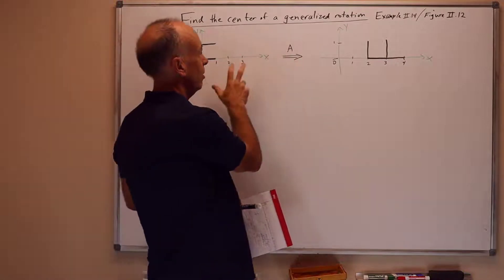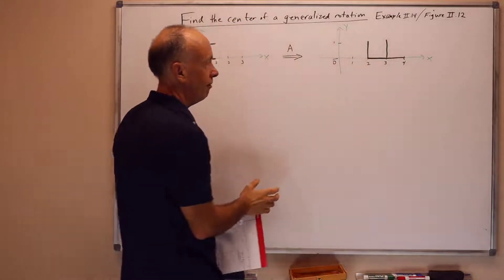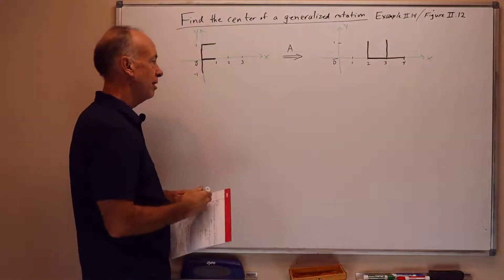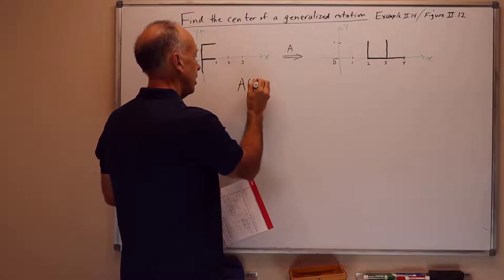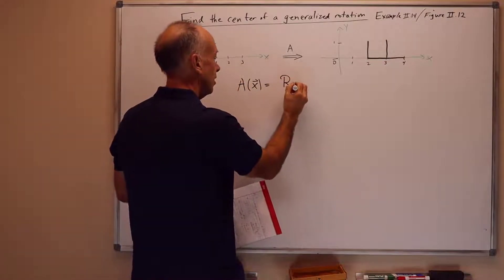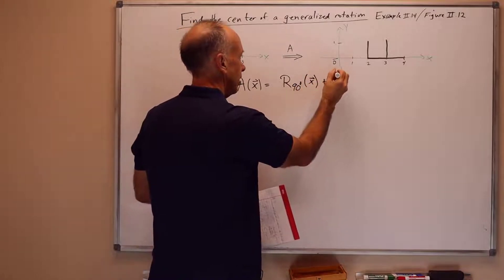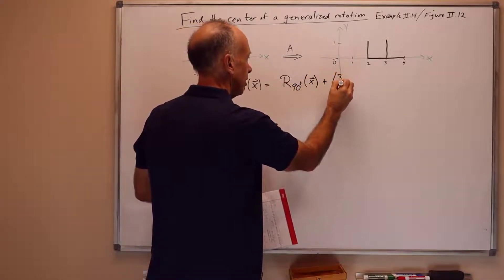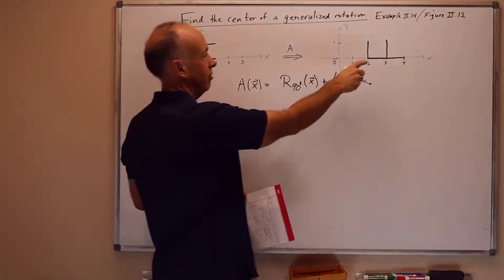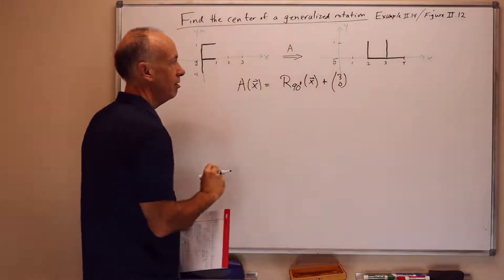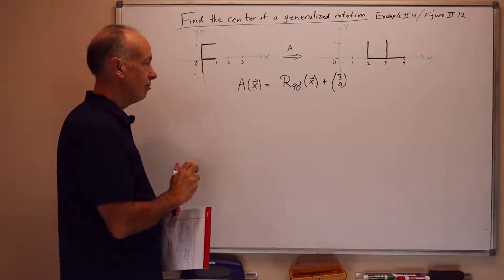I've pre-drawn a transformation A that takes the F in standard position and gives you an F over here. It's been translated and rotated, so in particular we have that A of x is R 90 degrees of x plus (3,0). The origin is moved to (3,0) and the F has been rotated 90 degrees in the counter-clockwise direction.